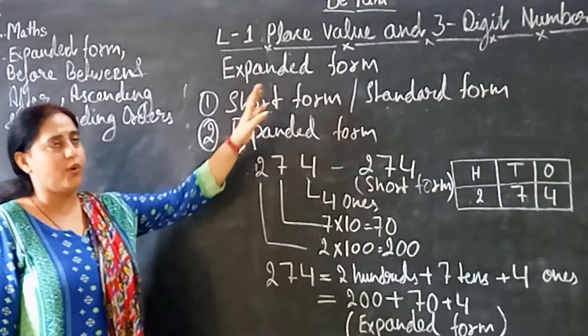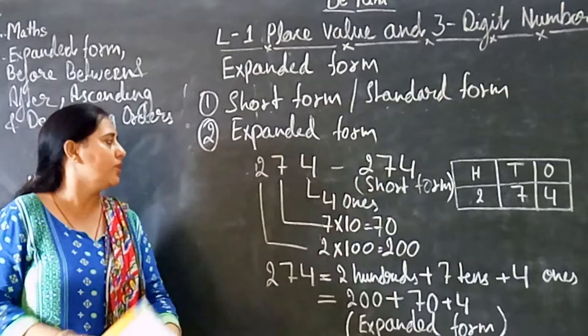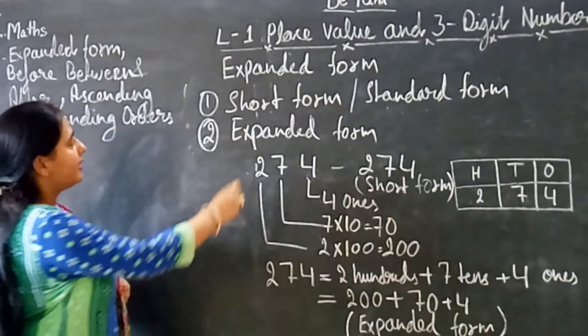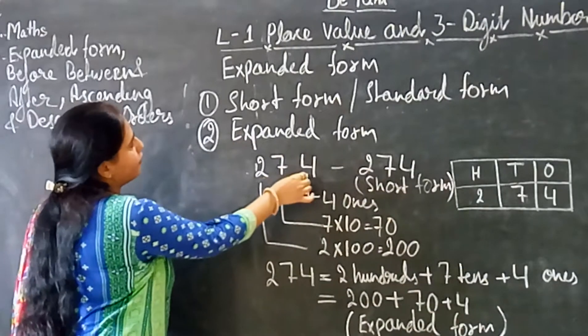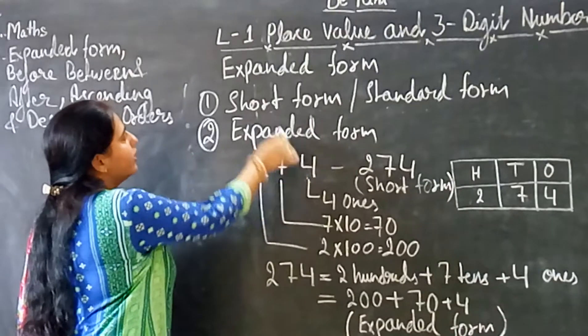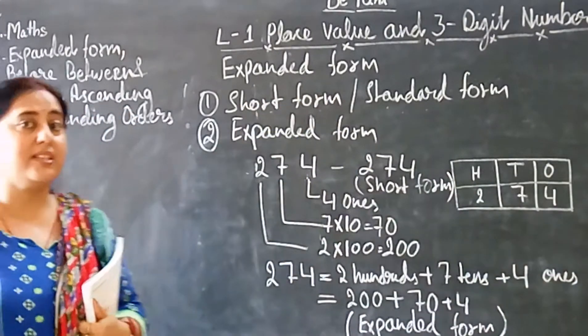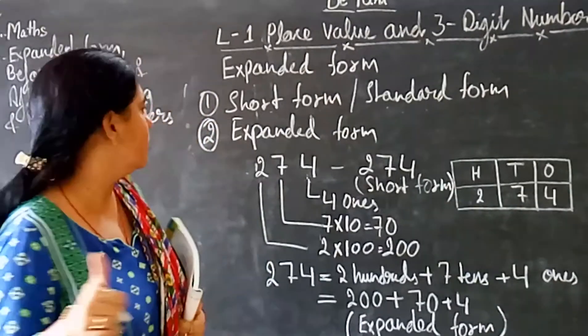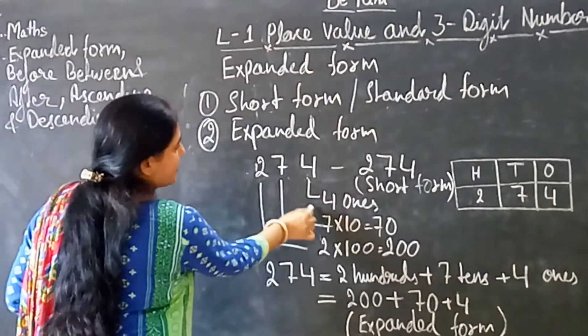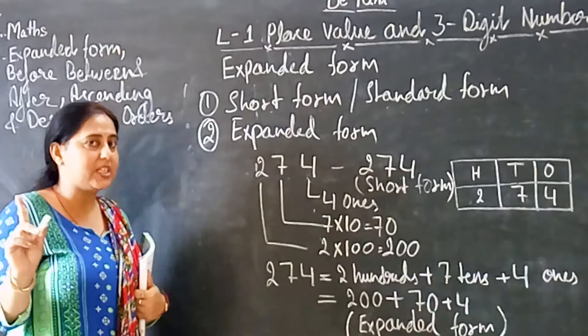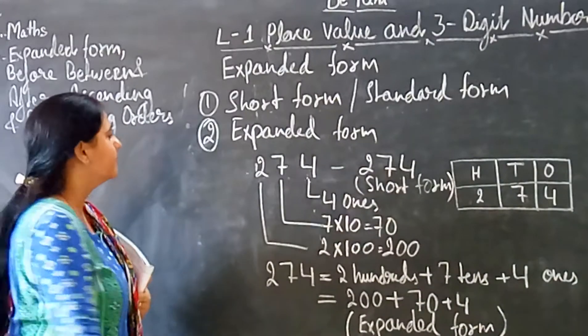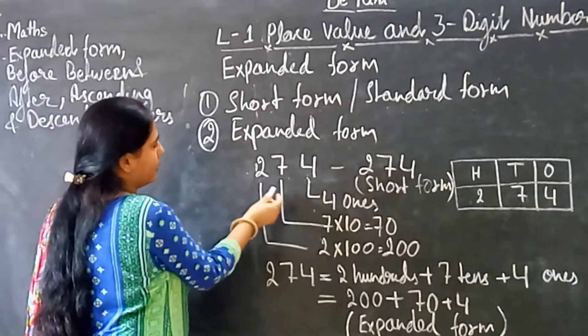Second one is expanded form. So how we will write 274 in expanded form? In yesterday's class, I taught you about face values, about the place values, remember everyone? Let's look here.